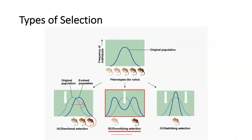We also have diversifying or disruptive selection, where the two extremes — the light mouse and the dark mouse — become more common, pushing the bell curve down and splitting the population so that half becomes light and half becomes dark, and the in-between color disappears. Or you can have stabilizing selection, where the moderate middle mouse becomes more common and we lose the darker and lighter extremes. Make sure you know the types of selection by name and what they look like, as you will need to identify them.